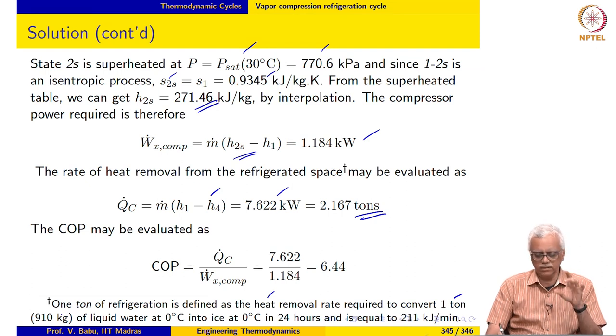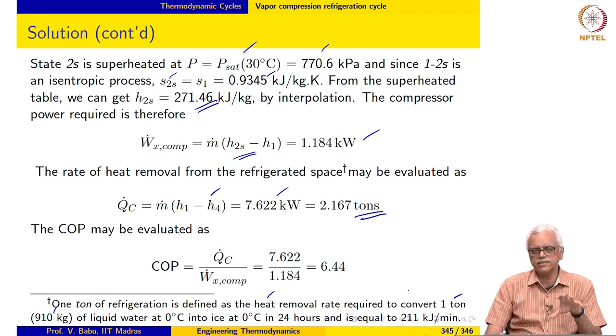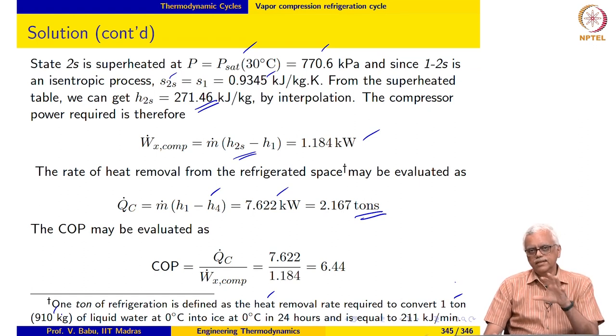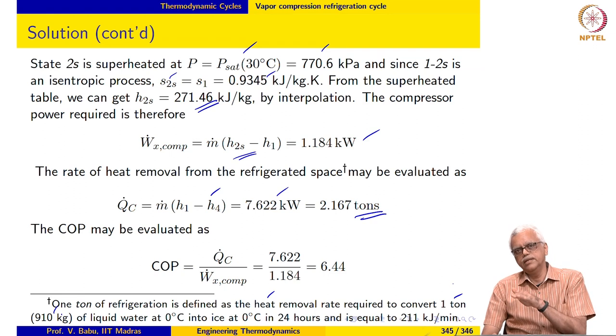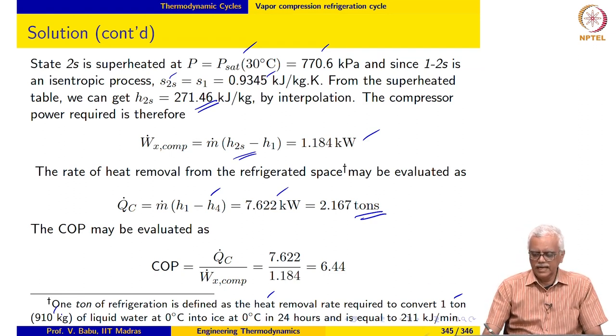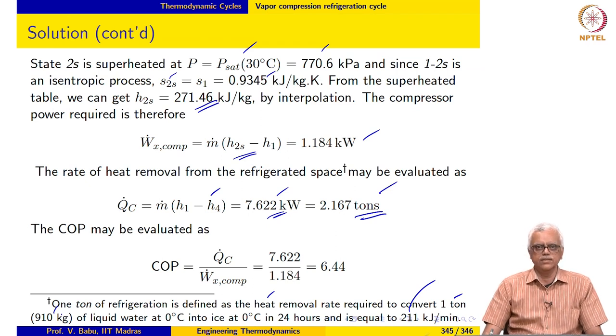1 ton here is 910 kilogram. It is not 1 metric ton, it is 1 ton which is equal to 910 kilograms of liquid water at 0 degree Celsius into ice at 0 degree Celsius in a span of 24 hours. It is the rate at which heat must be removed from 1 ton of water at 0 degree Celsius to convert it into ice at 0 degree Celsius in a span of 24 hours and is equal to 211 kilojoule per minute. If I convert this to tons, I get this to be 2.167 tons of refrigeration effect.